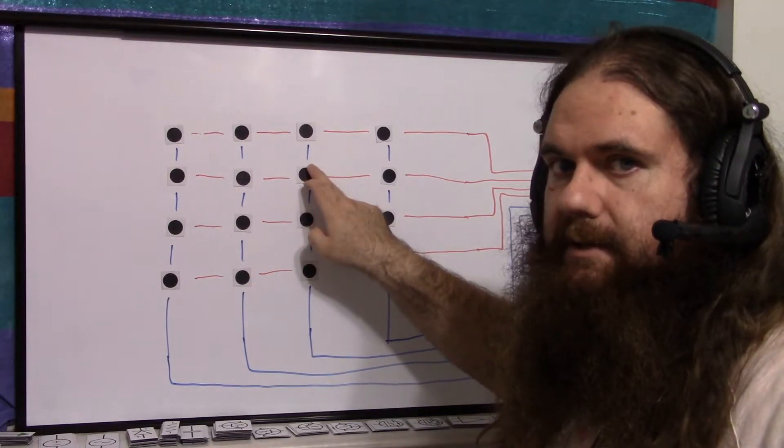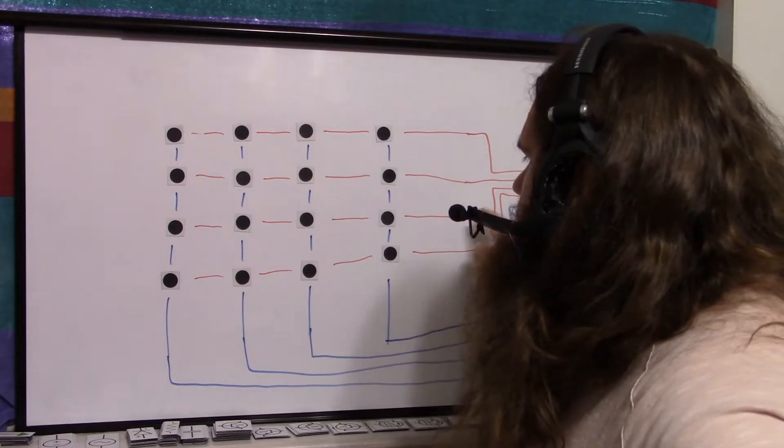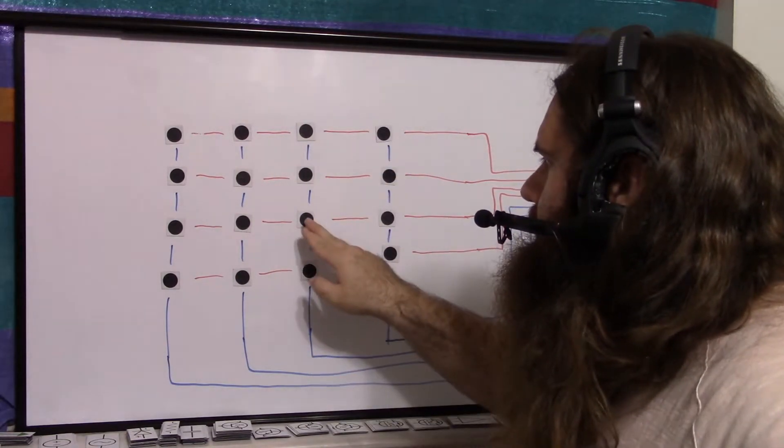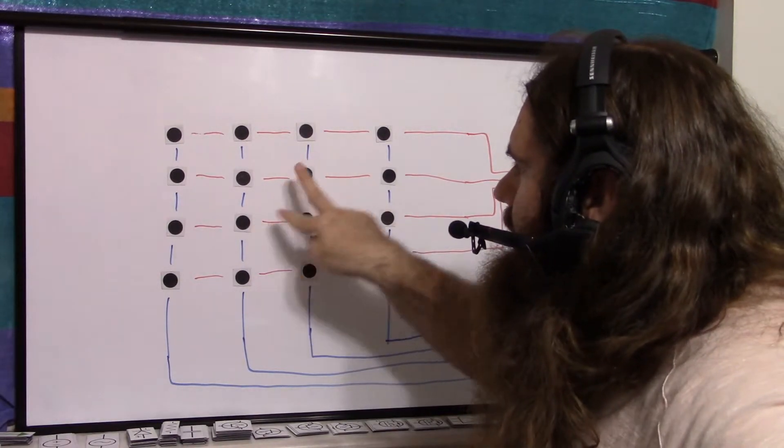which means the column's not connected. So if you power one row and you read that column and you're getting a signal, you know this button has to be on. So you can read any two.